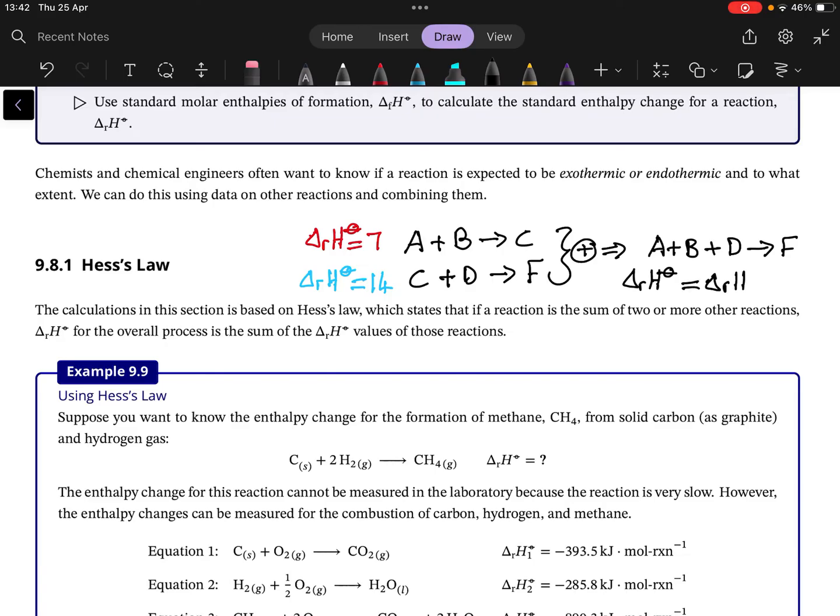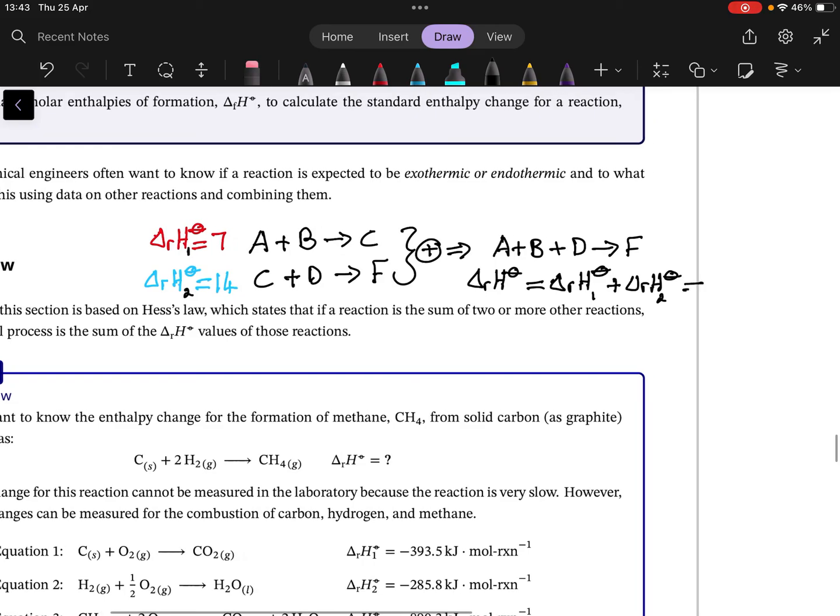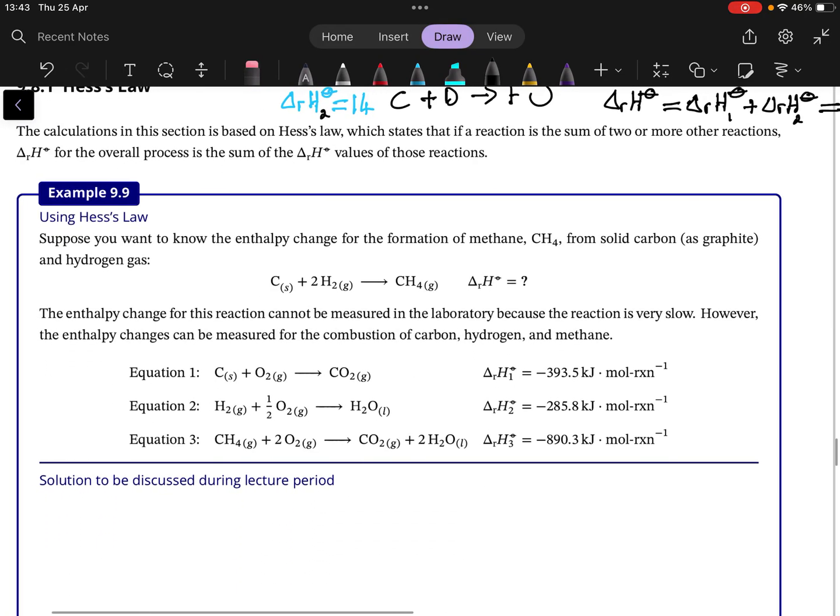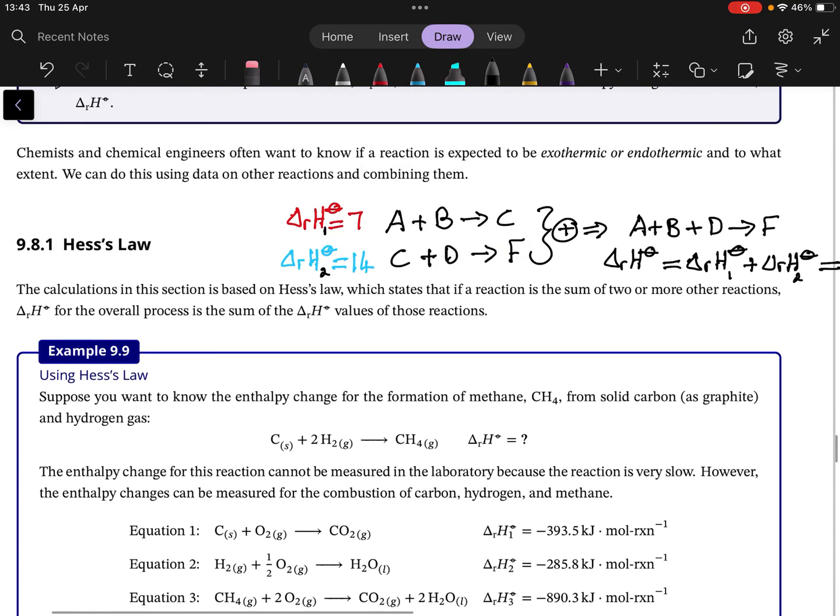So let's call this one one, let's call this one two. Delta rH of one plus delta rH of two. In other words, this one is equal to 21. That's what Hess's law states—that you can sum reaction equations and then you can also sum their enthalpy changes.